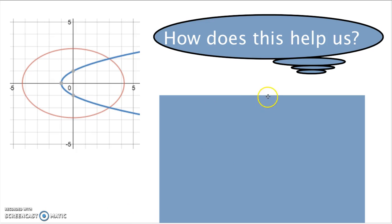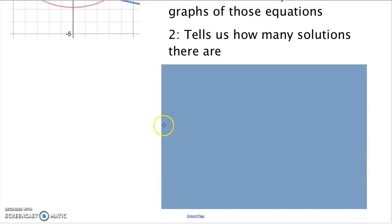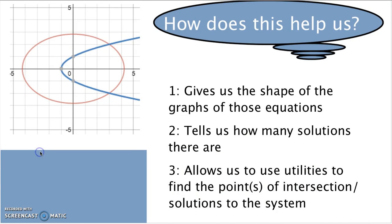If we're solving a system, we can graph those equations. First, it gives us the shape of the graphs so we don't necessarily have to recognize what shape the equation represents — we can put it in the calculator and it will show us. The oval is called an ellipse and the U-shape sideways is a parabola. Second, it tells us how many solutions there are. Solutions are points of intersection. The red ellipse and the blue parabola intersect at the point (3, 2) and the point (3, -2). Third, it allows us to use utilities in your graphing calculator to find those exact points of intersection, which are the solutions to the system.